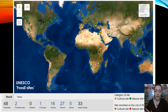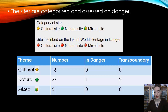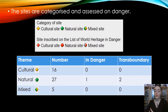All together there are 48 fossil sites in total: two are transboundary, one is in danger, and the rest are split between the three categories. The majority of the fossil sites are natural, but there is a significant number of cultural sites. As I said earlier, the cultural ones tend to be of anthropological value rather than paleontological.